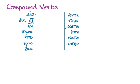So 'eis' will mean 'in' or 'into,' 'ek' or 'ex' will mean 'out of,' of course. And we can see, for instance, the example of 'ekpempo,' meaning 'send out.'